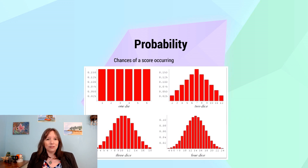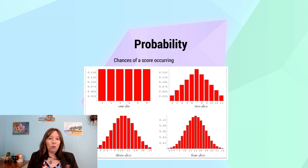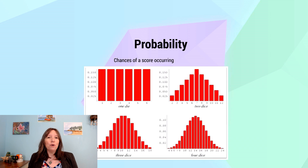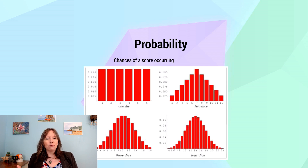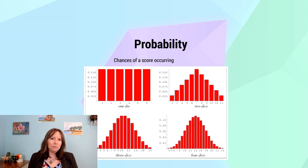Consider measuring the probability of rolling a 4 with dice. With one six-sided die, all six sides have equal probability, so rolling a 4 is pretty commonplace. With two dice, you can still roll a 4 fairly readily — though you'll roll more 7s on average. Now try rolling a 4 with three dice where all sides need to add up to 4 — you'll get many 10s, 11s, and 12s. Rolling a 4 becomes increasingly rare, toward the tail end of the distribution.